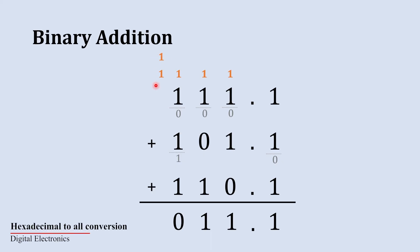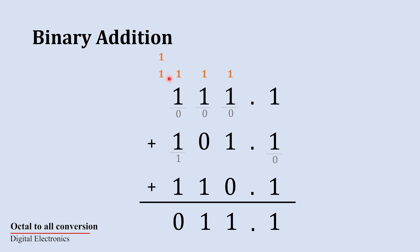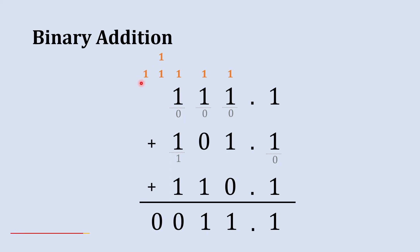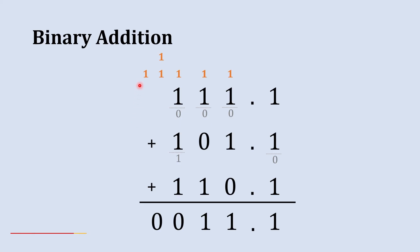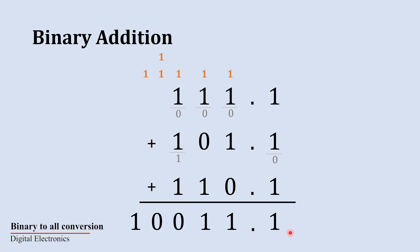Now there are two carries but no digits left in the numbers. So we add these two carries: 1 plus 1, the sum is 0 and carry is 1 to the next column. Now there is one carry remaining with no digits left in any number, so we bring this carry down directly. The final answer becomes 10011.1. That's how you add three layers of fraction binary numbers.